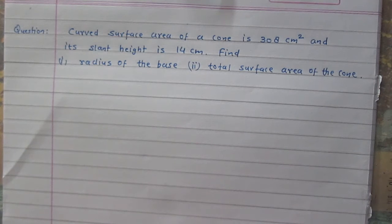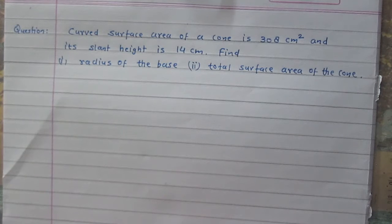Curved surface area of a cone is 308 cm² and its slant height is 14 cm. Find: (1) radius of the base, (2) total surface area of the cone.